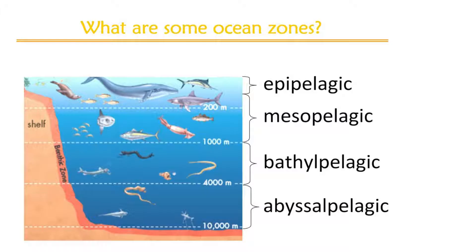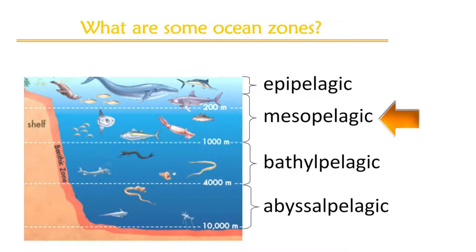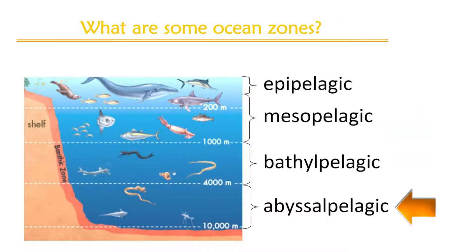What are some ocean zones? Let's name the zones, the zones, the zones. What are some ocean zones? Epipelagic, mesopelagic, bathypelagic, abyssalpelagic. These are some ocean zones.